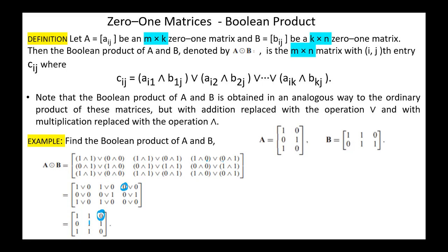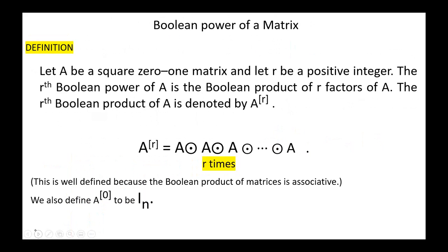Next, the Boolean power of a matrix. Let A be a square 0-1 matrix and let R be a positive integer. The R-th Boolean power of A is the Boolean product of R factors of A, denoted A Boolean-power R. So A Boolean-power R equals A Boolean-product A Boolean-product A, R times. This is well defined because the Boolean product of matrices is associative.